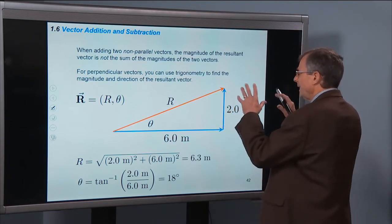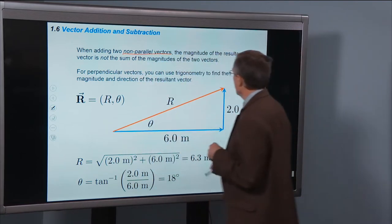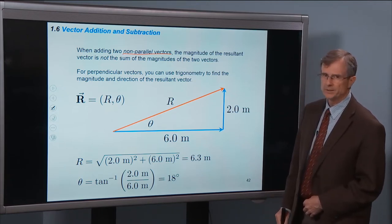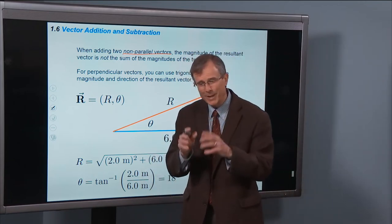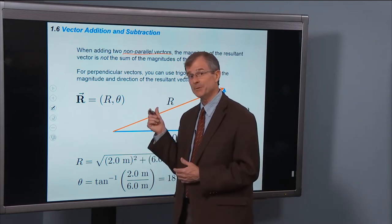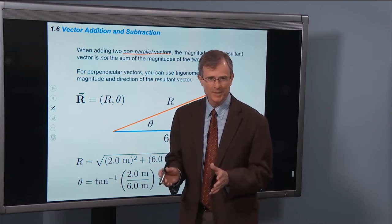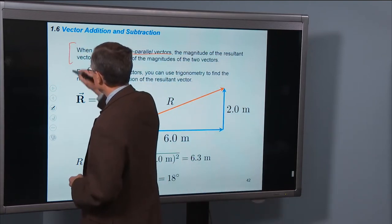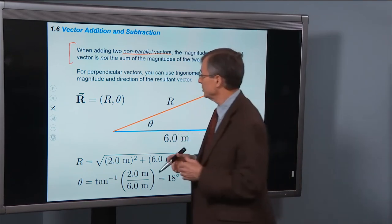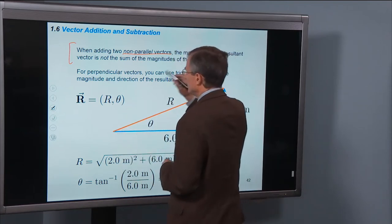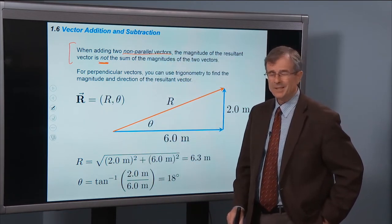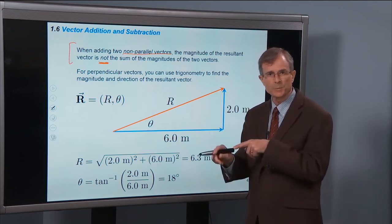So when adding two non-parallel vectors, the magnitude of the resultant vector is not the sum of the magnitudes of the two vectors. I'd like to drill that into your head because someday — probably during this class, probably during this next week — you'll make that mistake. I've made that mistake. But when you do and can't get the answer to work out, ask yourself: did I add the magnitudes up? Then I made a mistake. Remember, the magnitude of the resultant vector is not the sum of the magnitudes, except in the special case of the two vectors being parallel.